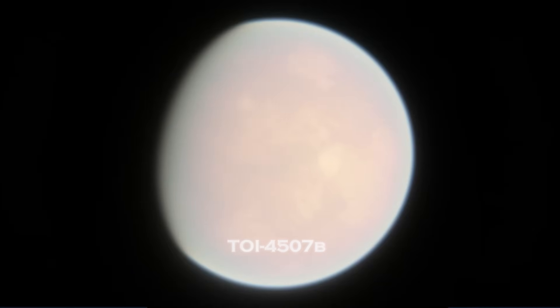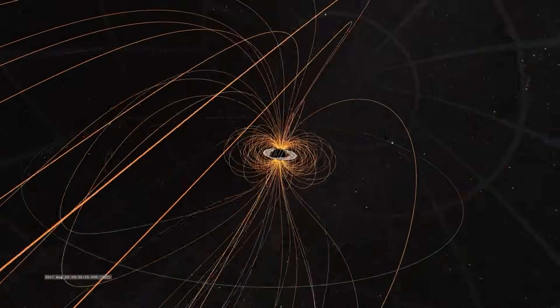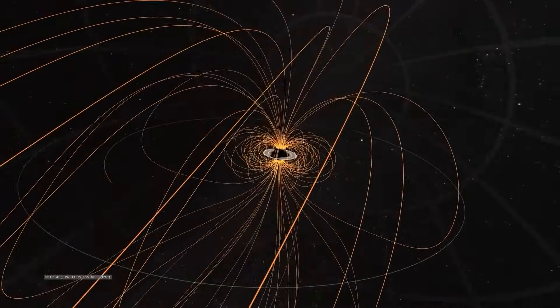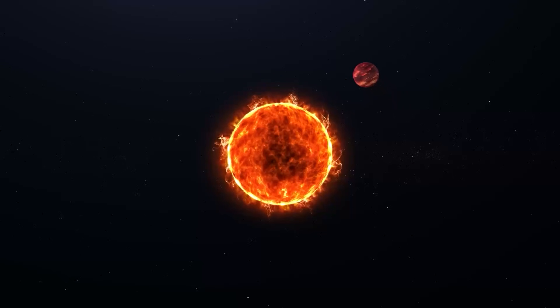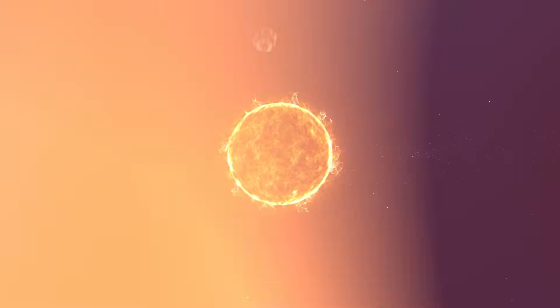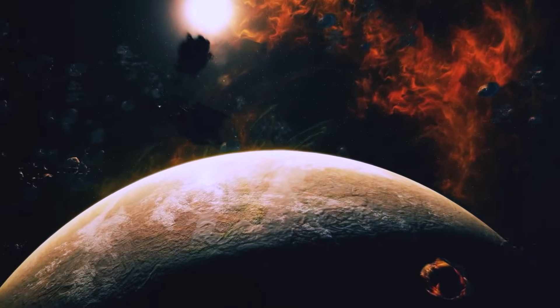TOI 4507b moves around its star at an inclination close to 90 degrees, meaning its orbit is almost perpendicular to the star's rotation. That kind of configuration does not happen gently.